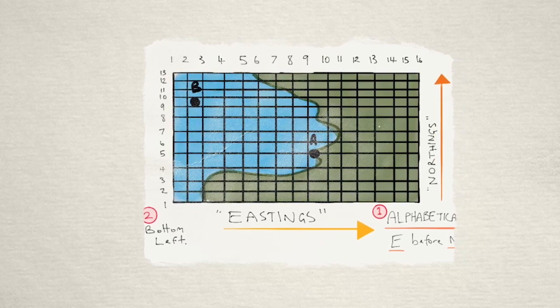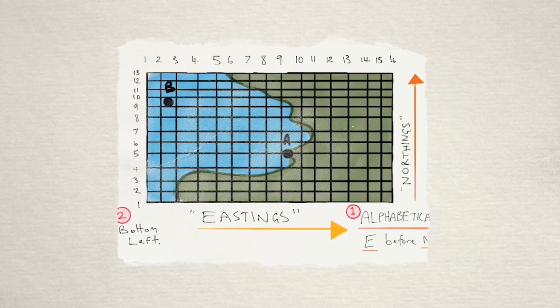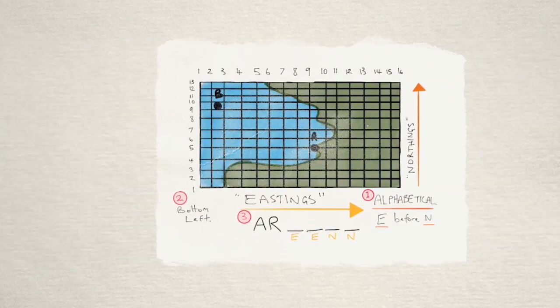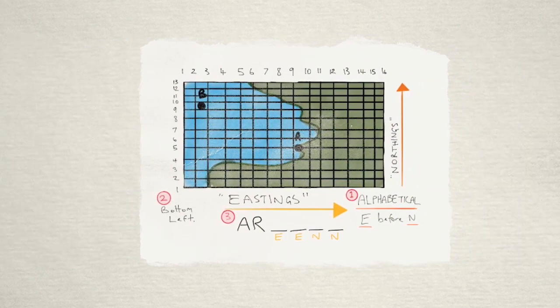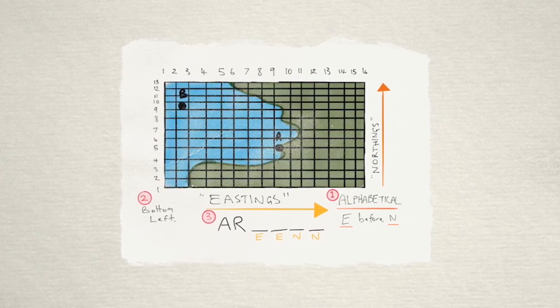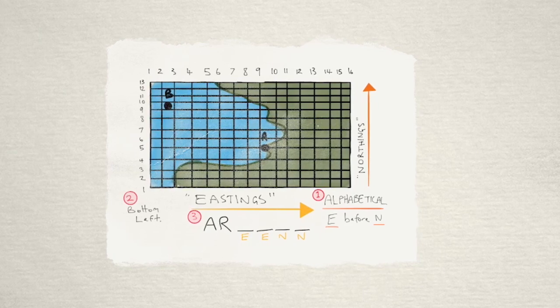Also we count the area based on whichever set of coordinates or eastings and northings are on the bottom left of the square. And so when we're setting out area reference it should look like number three there: AR for area reference then easting, northing. Let me explain a little bit further in a quick video.